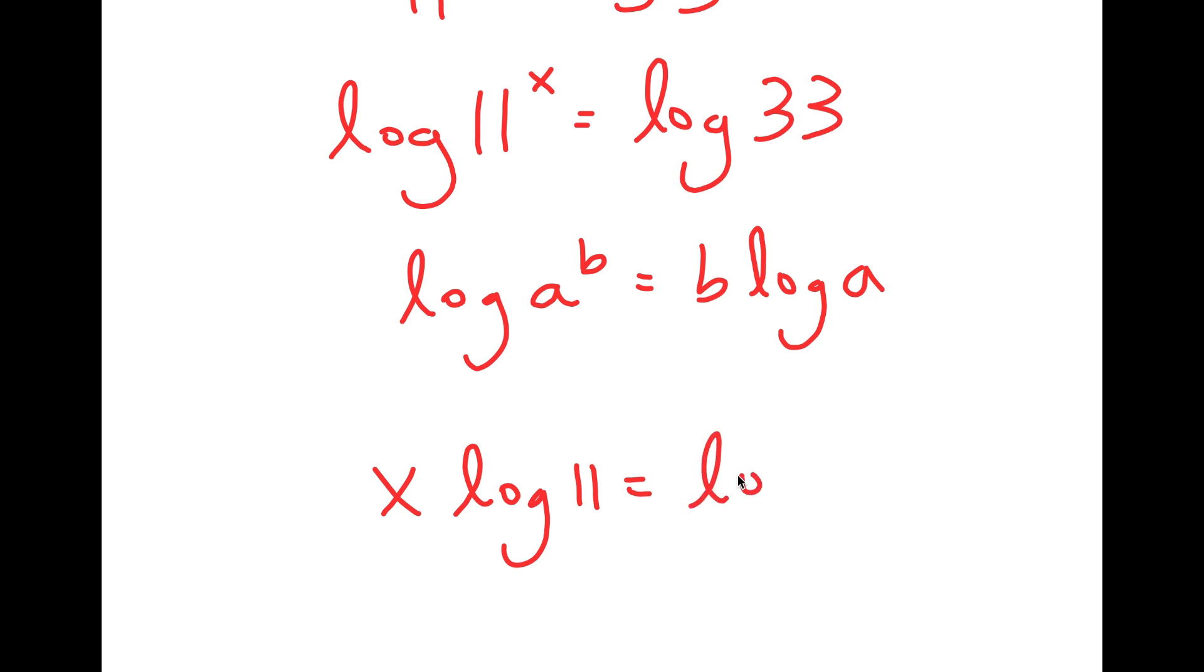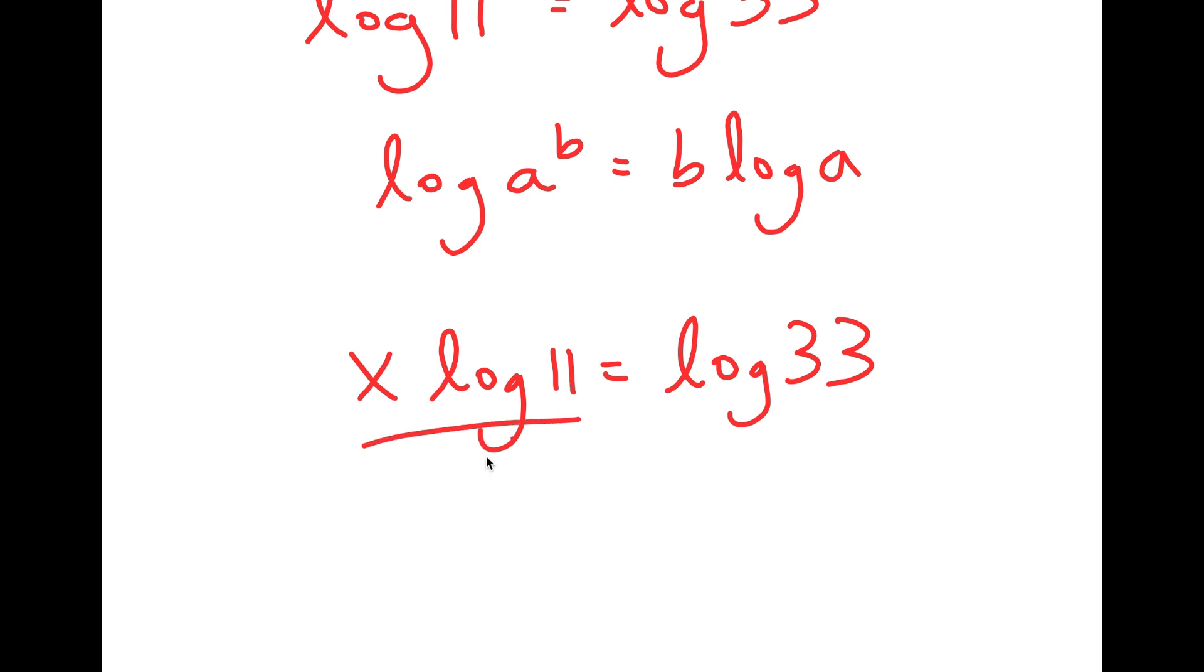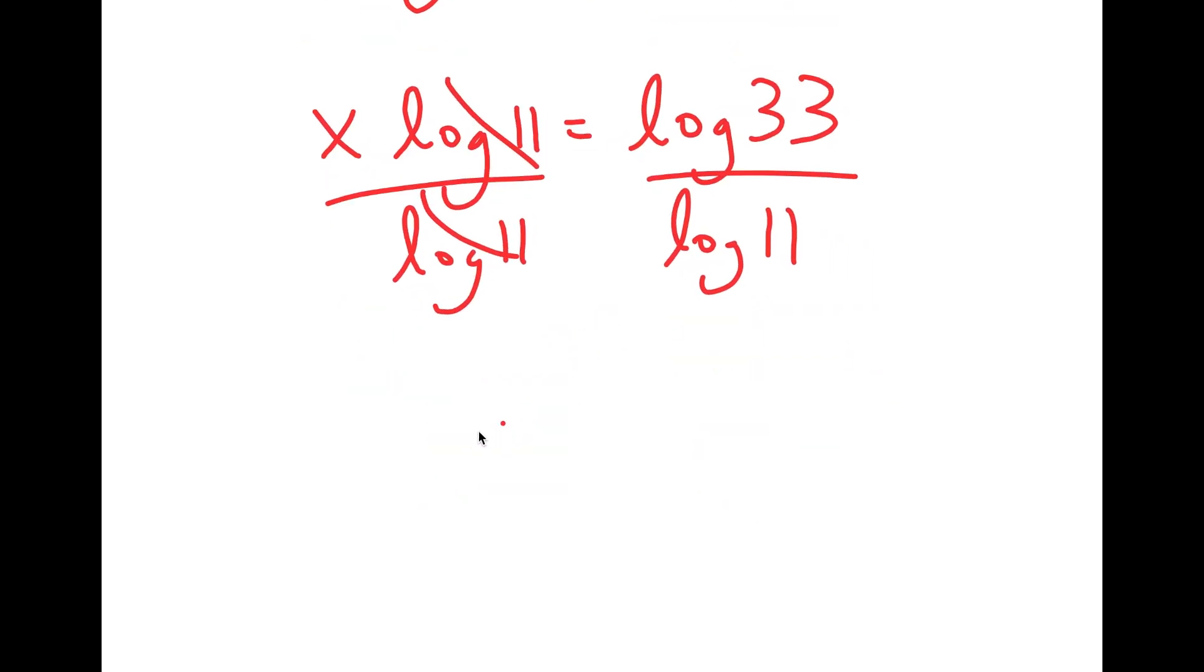So I get x times log 11 is equal to log 33. And from here, I'm going to divide both sides by log 11. So these two cancel out, and I get x is equal to log 33 over log 11.